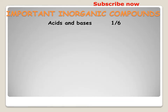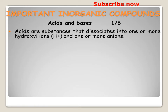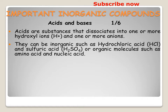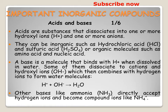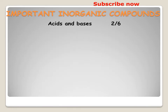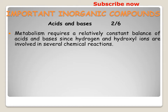Acids are substances that dissociate into one or more hydrogen ions and one or more anions. They can be inorganic molecules such as hydrochloric acid and sulfuric acid, or organic molecules such as amino acids and nucleic acids. A base is a molecule that binds with hydrogen ions when it dissolves in water. Some bases dissociate into cations and hydroxyl ions, which then combine with hydrogen ions to form water molecules. Other bases like ammonia directly accept hydrogen ions and become compound ions like ammonium ions. Metabolism requires a relatively constant balance of acids and bases since hydrogen and hydroxyl ions are involved in several chemical reactions.